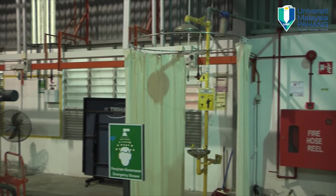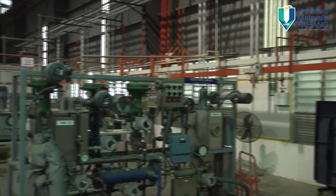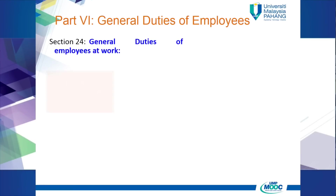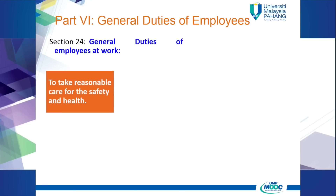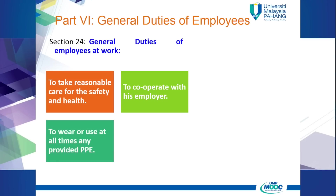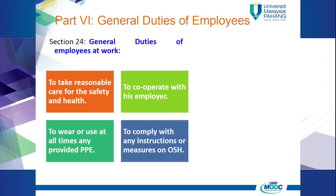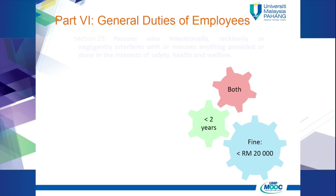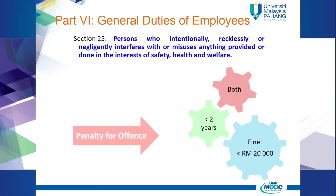Section 24 discusses the duties of employees at work: number one, to take reasonable care for safety and health; number two, to cooperate with their employer; number three, to wear or use at all times any provided protective equipment; and number four, to comply with any instructions or measures on occupational safety and health. Section 25 describes the penalty for a person who intentionally, recklessly or negligently interferes with or misuses anything provided in pursuance of this act.